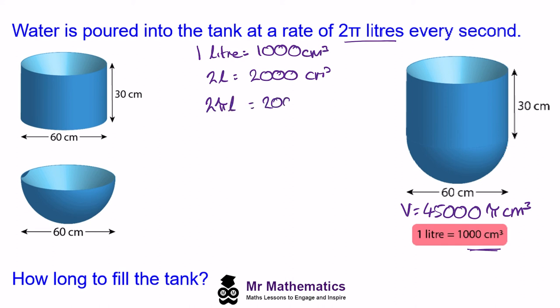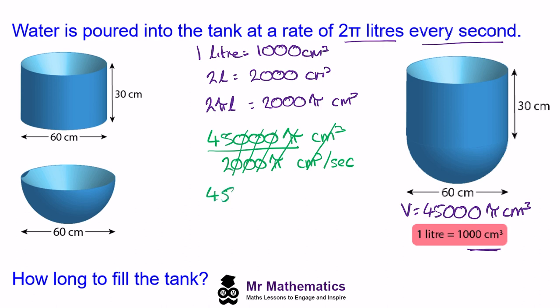So to work out how long it takes to fill the tank we have our total volume 45,000π cm³ divided by the rate which is 2,000π cm³ every second. You can see the cm³ will cancel as will the π and the zeros, so 45 over 2 is 22.5 seconds to fill the tank.